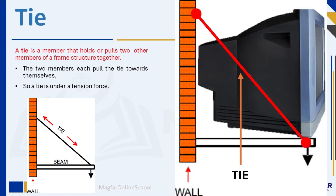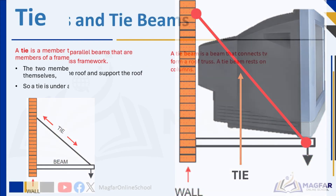The TV pushes down on the shelf because of gravity, making the shelf want to sag or pull away from the wall. To stop this, we use a tie or diagonal member — we attach one end to the shelf and the other end to the wall. When the TV's weight tries to pull the shelf away, the tie comes into action, resisting this pull by stretching diagonally. This stretching is what we call a tension force, keeping everything safely in place.